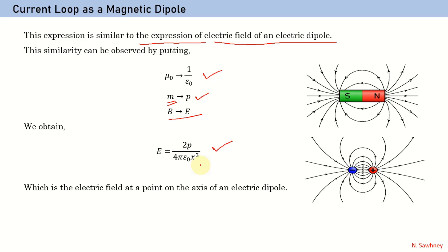This similarity can be easily understood: in a magnetic dipole — a bar magnet — magnetic field lines originate from the north pole and end at the south pole. In an electric dipole, formed by two equal and opposite charges placed at a small distance apart, field lines originate from the positive charge and end at the negative charge. So the analogy is clear.